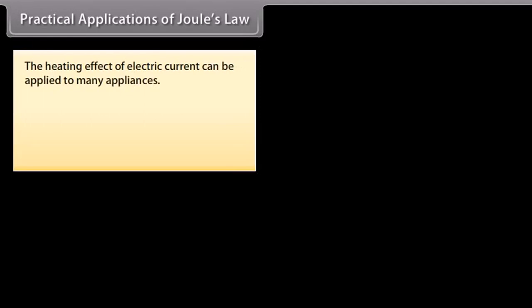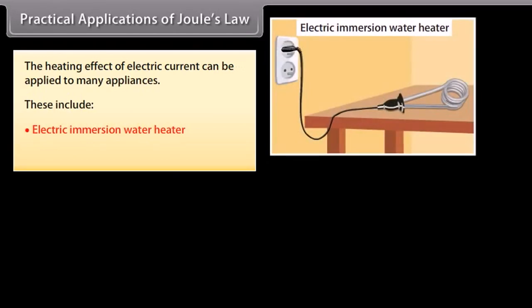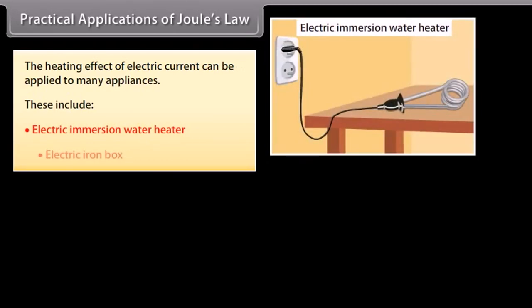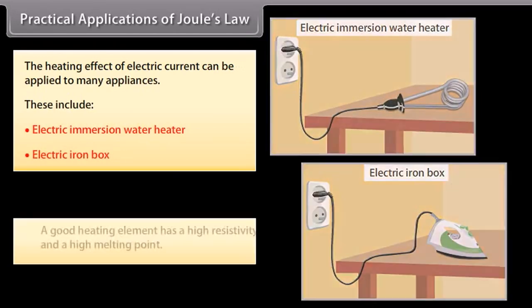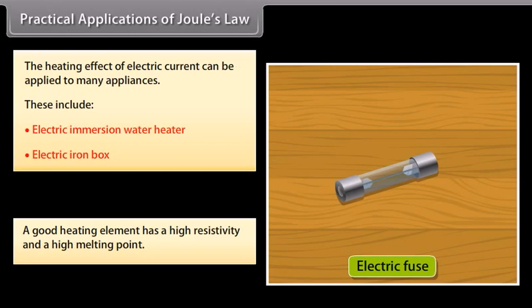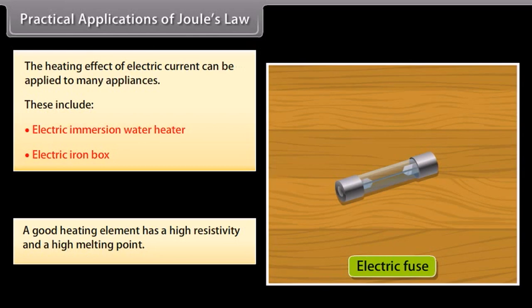The heating effect of electric current can be applied to many appliances, including electric immersion water heaters and electric iron boxes. A good heating element has high resistivity and a high melting point. An electric fuse is an example of the heating effect; a fuse rated 3A can sustain a maximum current of 3A.